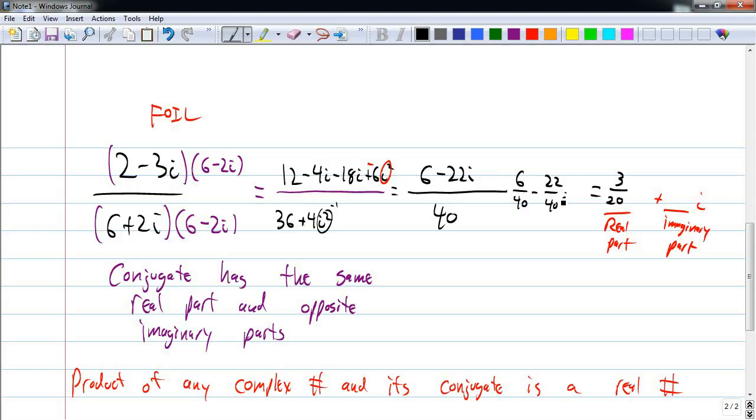11 over 40. I'm sorry. 22 over 40 is 11 over 20. And that's my imaginary part. So 3 20ths plus 11 20ths i. And that's the quotient of 2 minus 3i and 6 plus 2i.